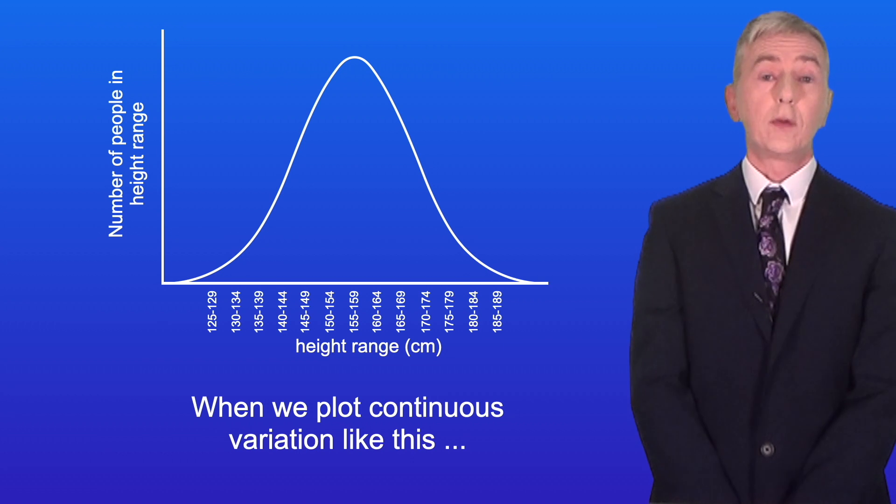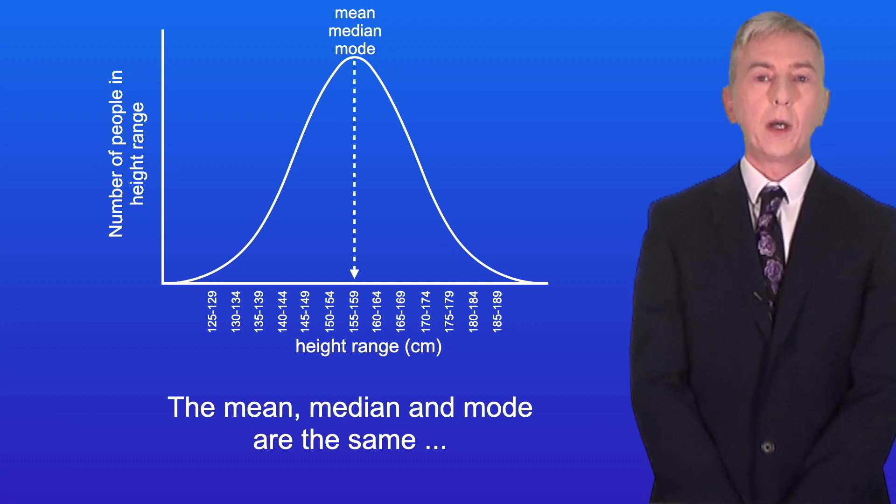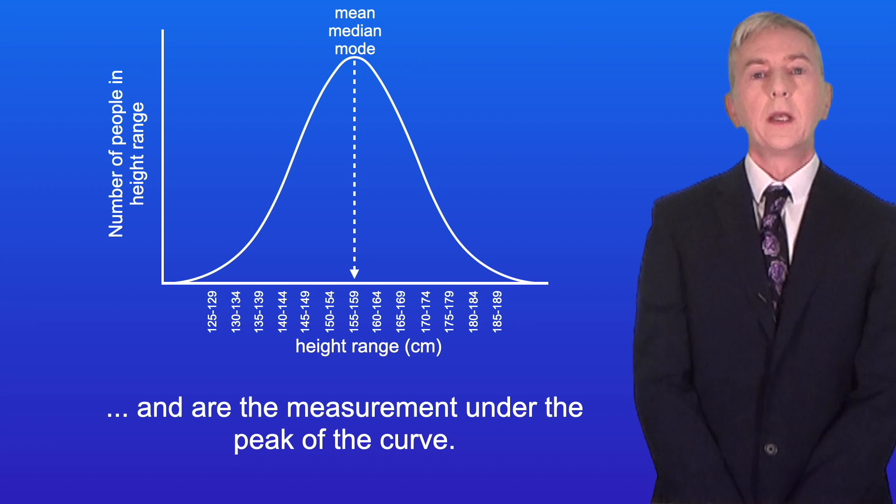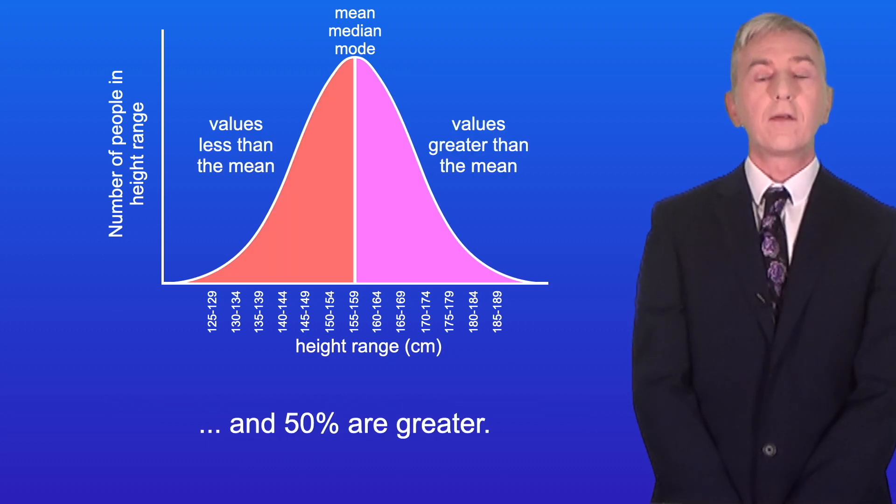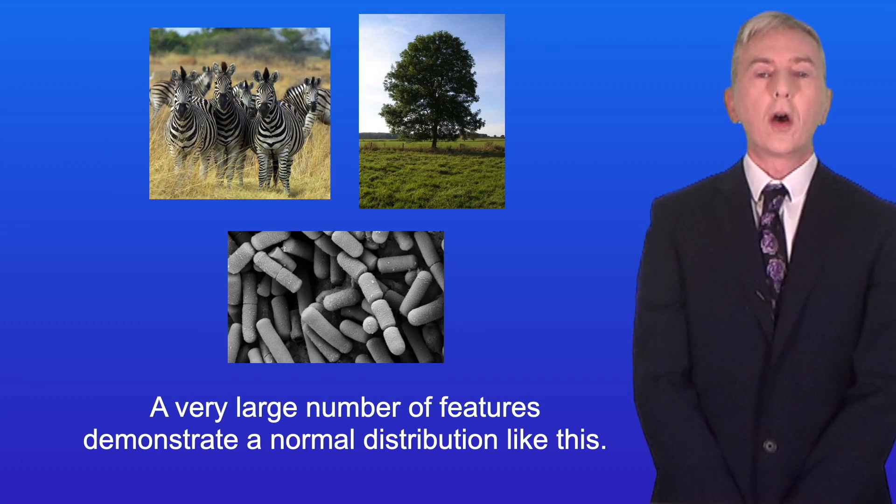Now when we plot continuous variation like this, scientists call this a normal distribution curve. The mean, median, and mode are the same, and are the measurement under the peak of the curve. And we can see that 50% of the values are less than the mean, and 50% are greater. Notice that the normal distribution curve is symmetrical about the mean. Now a very large number of features demonstrate a normal distribution like this.